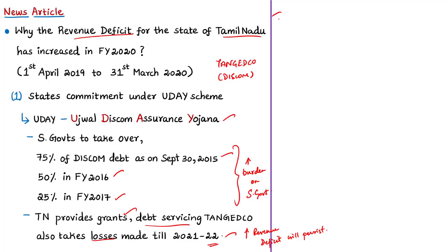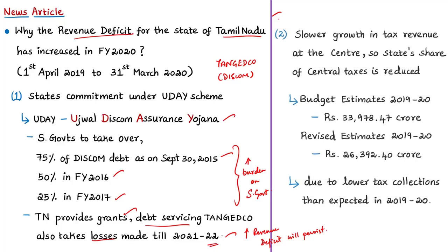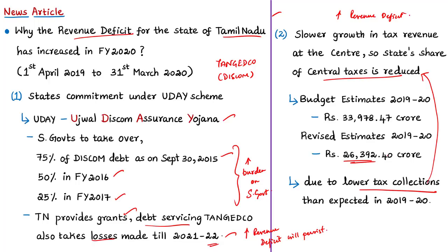Another reason for rising revenue deficit is slower growth in central tax revenue. In the budget speech, the state finance minister stated that Tamil Nadu faced a serious setback in the revised estimates of 2019-20 due to an unprecedented reduction in its share of central taxes, caused by lower corporate tax collections. As a result, the overall revenue deficit for 2019-20 increased to around 25,000 crore rupees in revised estimates, compared to the originally budgeted amount of around 14,300 crores.